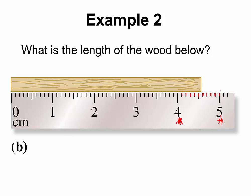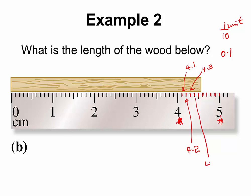So what would be the value of each division? Well, one unit between four and five — that would be one unit — has to be divided into ten, which is 0.1. So that means this is 4.1, this would be 4.2, this would be 4.3, this would be 4.4, and this would be 4.5.